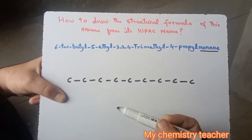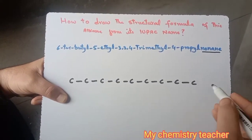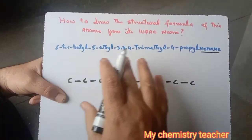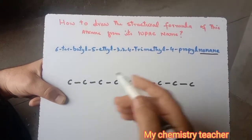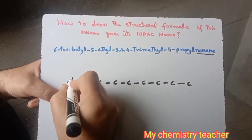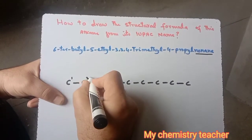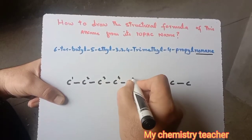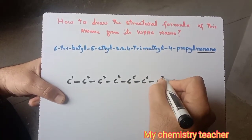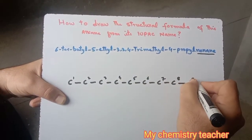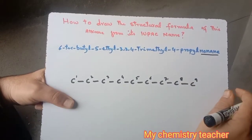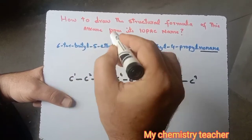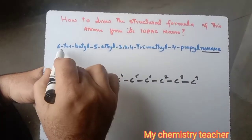Next, we number the chain starting from either side — you can start from the right or from the left. Give these carbons their numbers: this is carbon number one, two, three, four, five, six, seven, eight, and nine.